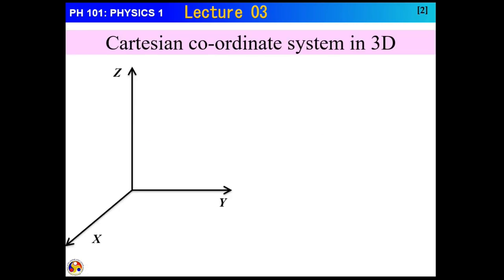Similar to two-dimension, we will start with the Cartesian coordinate system. In two-dimension, we had two axes, x and y. Now in three-dimension, we have three axes: x, y, and z.